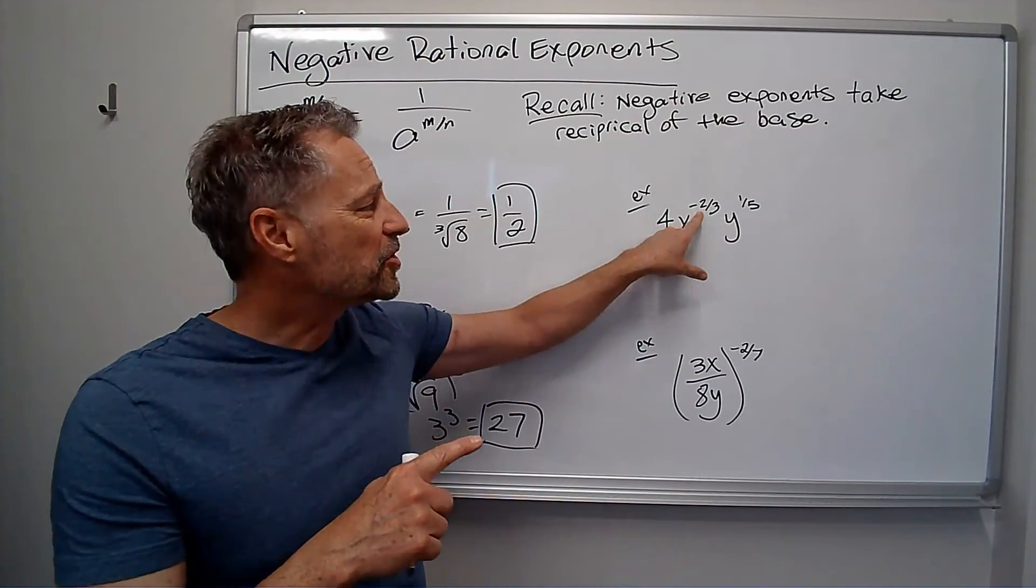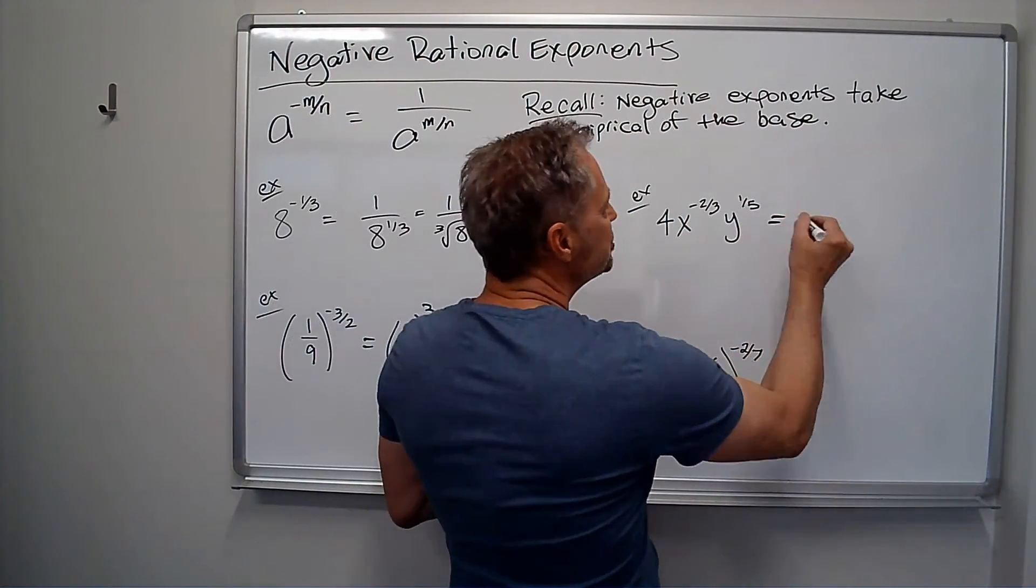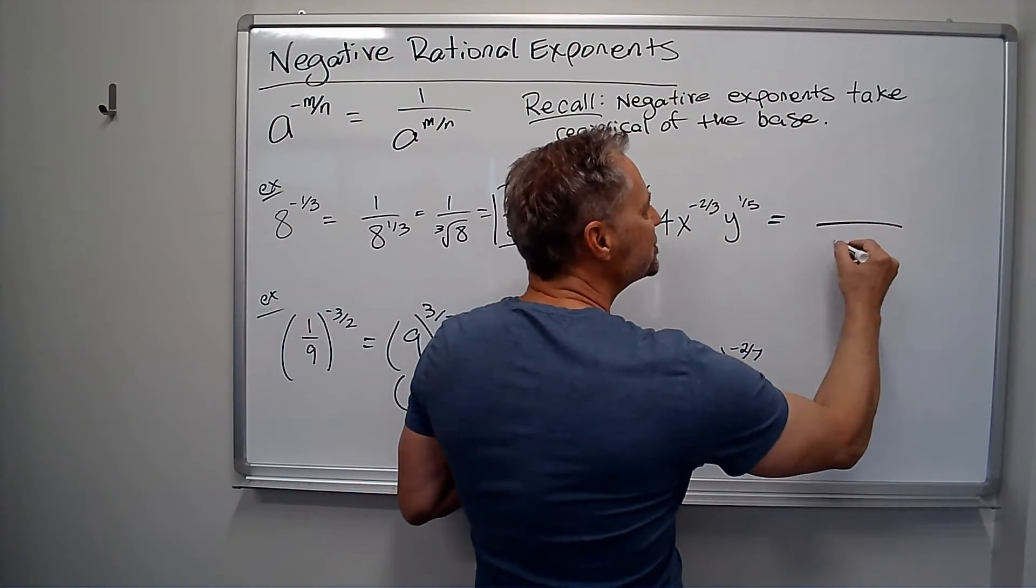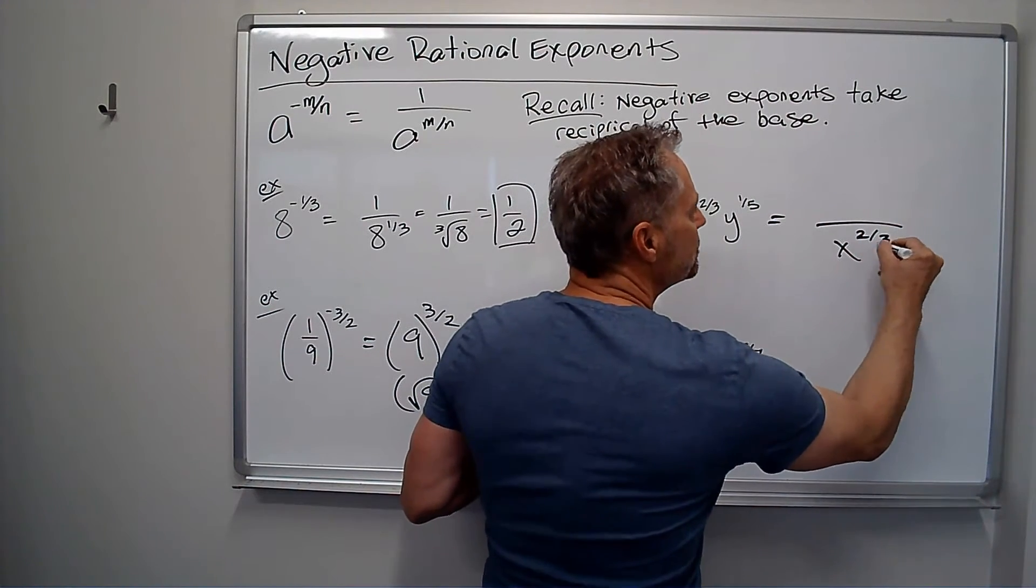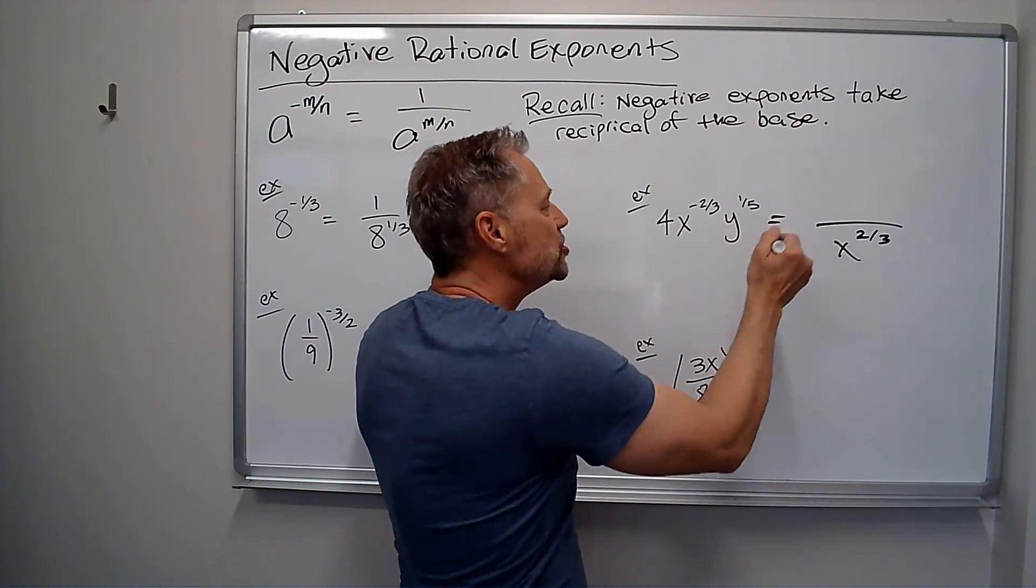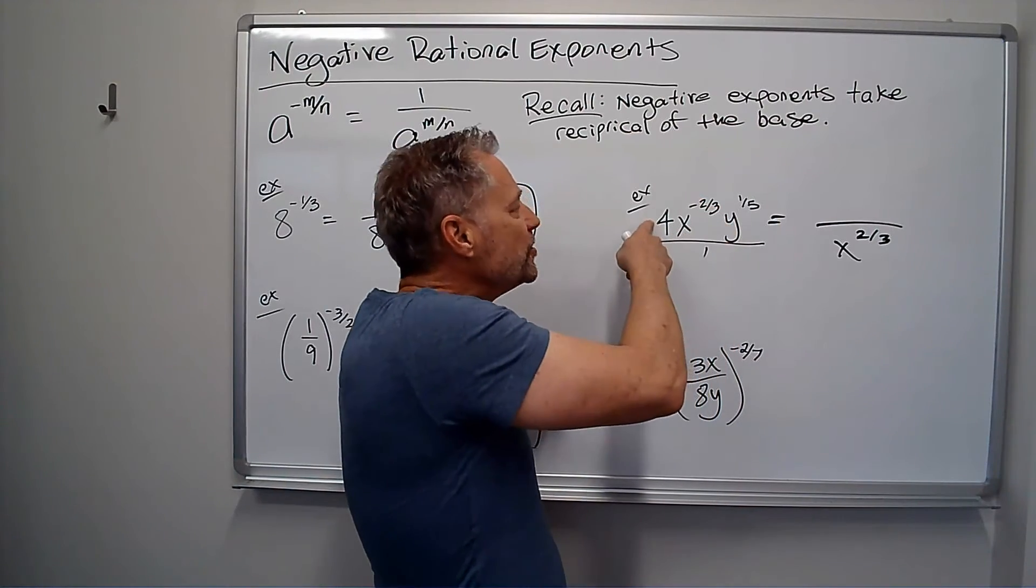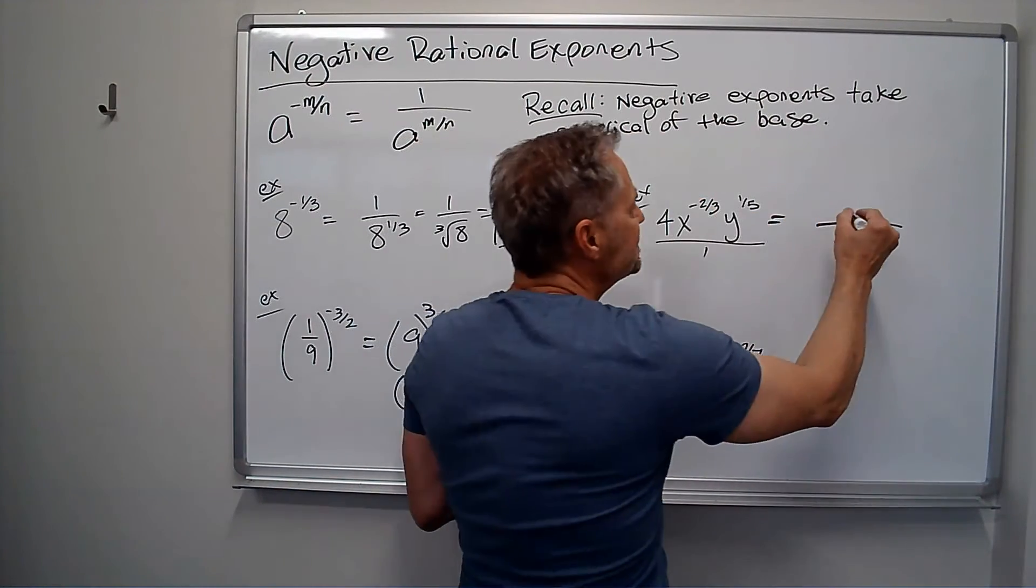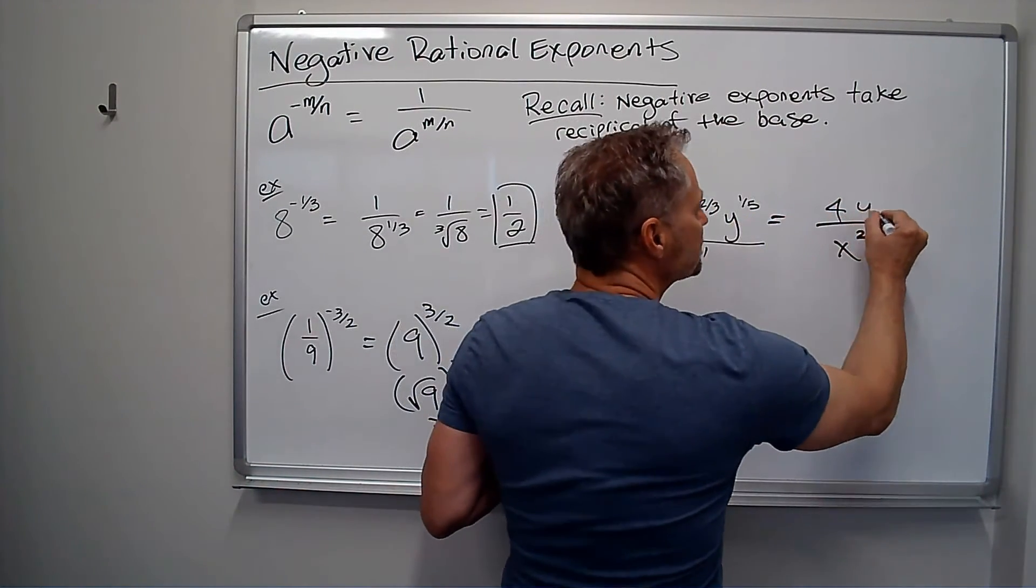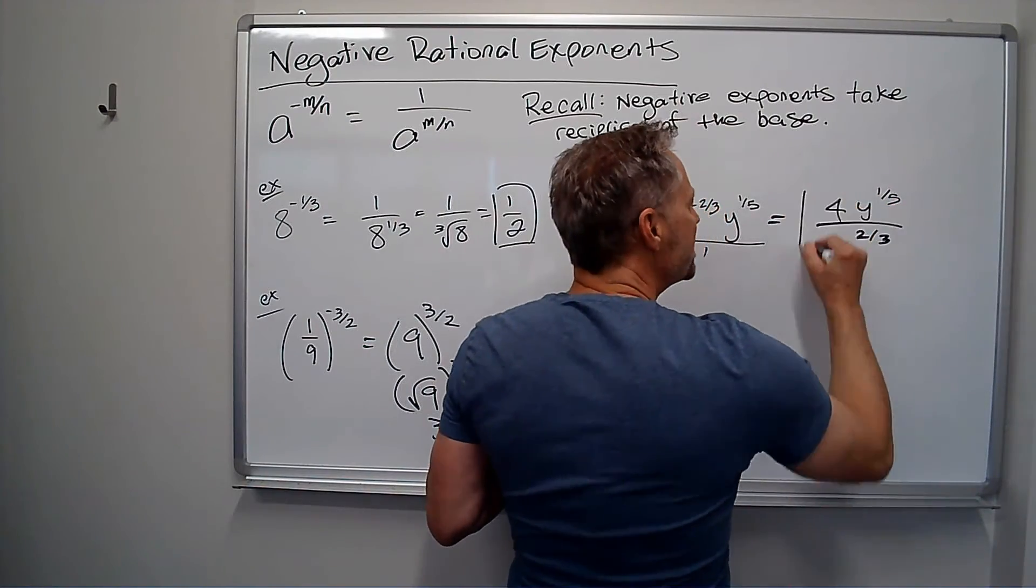So, I'm going to take the reciprocal. Well, that really just means I'm just going to put that x to the 2/3 on the bottom. So, instead of it being in the numerator, because we can find that over 1, that goes down. The 4 doesn't have a negative exponent, it stays there. The y to the 1/5 is already positive, it stays there. And that's my answer.